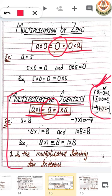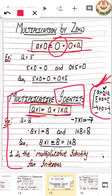So identity means we get the same number back as the answer. In addition, adding 0 to any number gives the same number. In multiplication, multiplying by 1 gives the same number. Keep in mind: 0 is the additive identity and 1 is the multiplicative identity for integers.